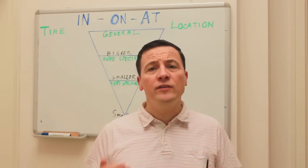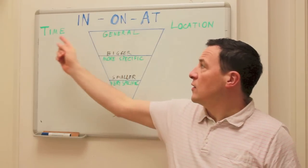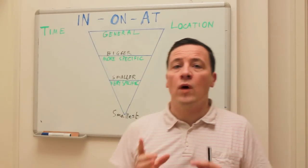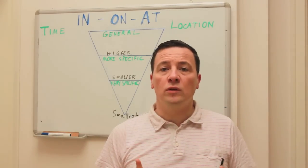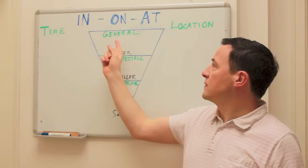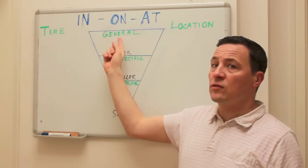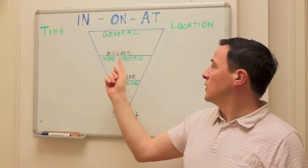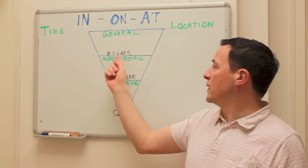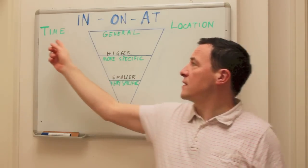So when do we use in, on, at to talk about time and to talk about location? Well, the simple rule that you can remember is, think about it like this: in general, more specific, and very specific — or bigger, smaller, smallest. So for example, when you're talking about time...